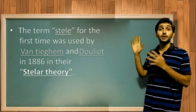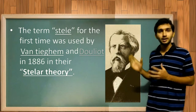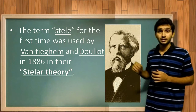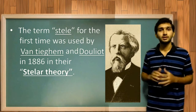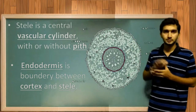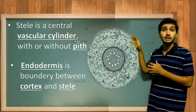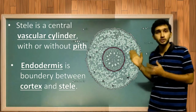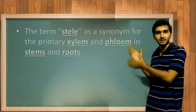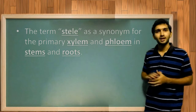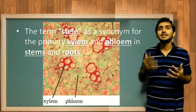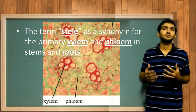The term stele was first used by two scientists, Van Tieghem and Dalyard, in 1886. In their stelar theory, the stele is a vascular cylinder with or without pith, and the endodermis is present within it, acting as a boundary between the cortex and the stele — that is, the boundary between cortex and the vasculature within.